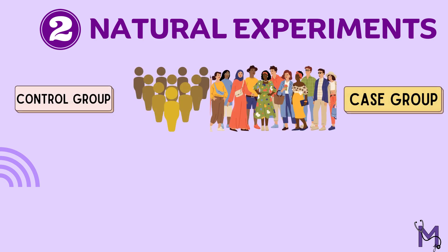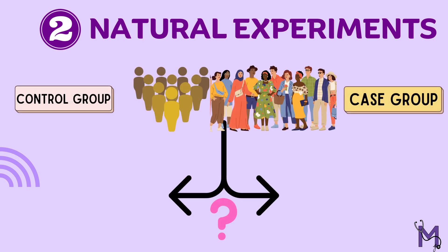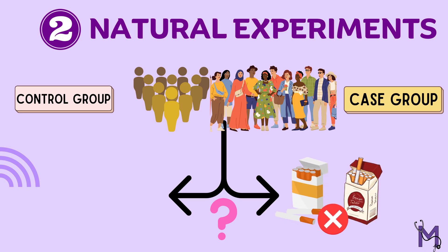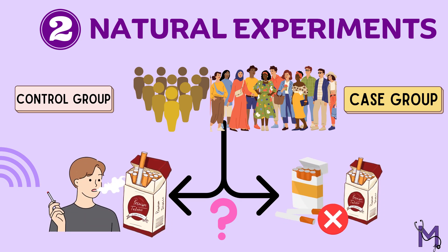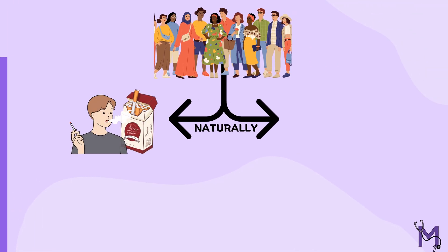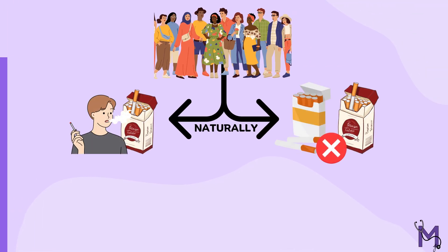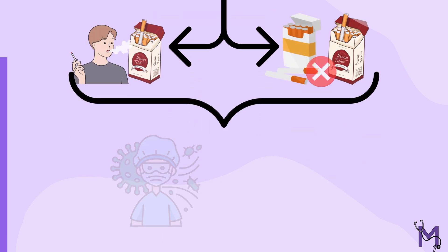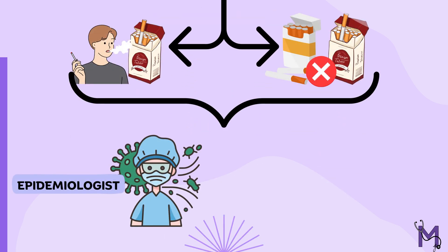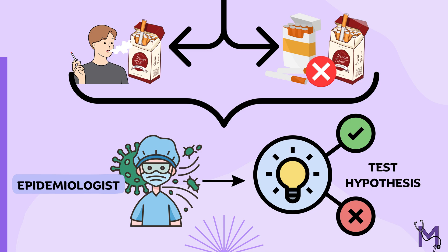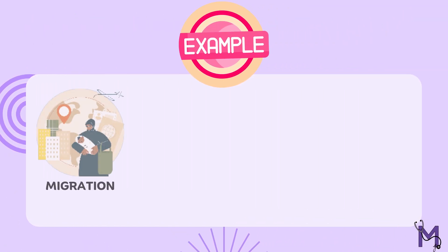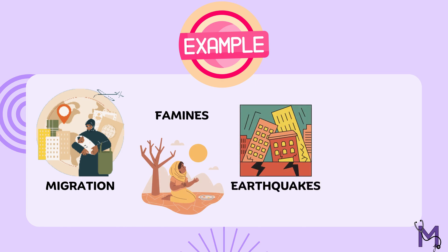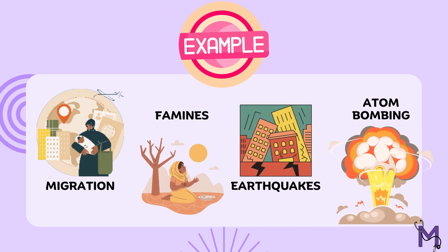The second example is that of natural experiments. When selecting people for our control and case group, we cannot tell a group of people that they need to stop smoking or start smoking for our study. Naturally, some people are smokers and some are not, so this separation is helpful for the researcher. Epidemiologists can take advantage of this natural separation and hence test their hypothesis. Other examples include migrants, famines, earthquakes, and the atomic bombing of Japan.